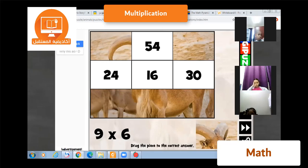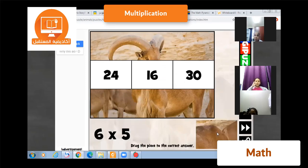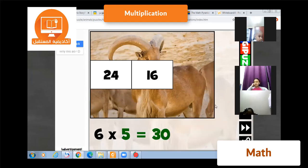Nine times six equals fifty-four. Fifty-four, Bravo! شطر. مريم حسن, six times five equals thirty. سطورة, سطر, سطر.